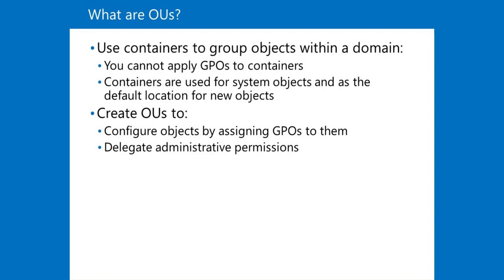There are several containers that you can see only when you click advanced features on the view menu. The following objects are hidden by default. Lost and Found: this container holds orphaned objects. Program Data: this container holds Active Directory data for Microsoft applications, such as Active Directory Federation Services (ADFS). System: this container holds the built-in system settings. NTDS Quotas: this container holds directory service quota data. TPM Devices: this container is new with Windows Server 2016; it stores the recovery information for Trusted Platform Module (TPM) devices.